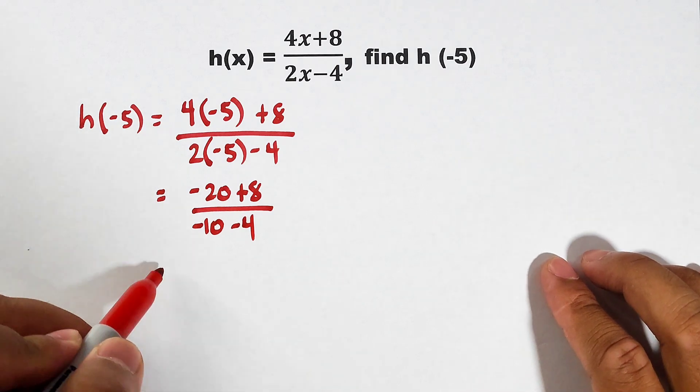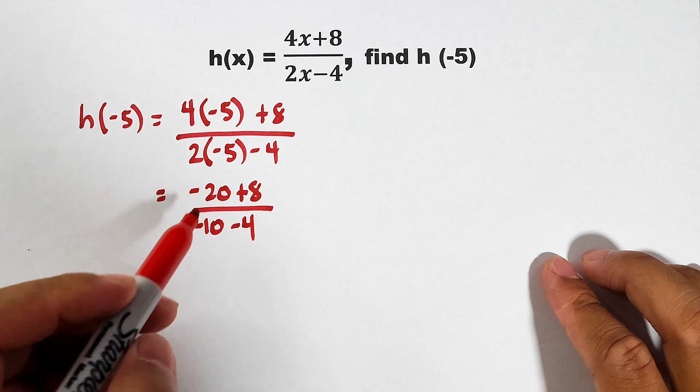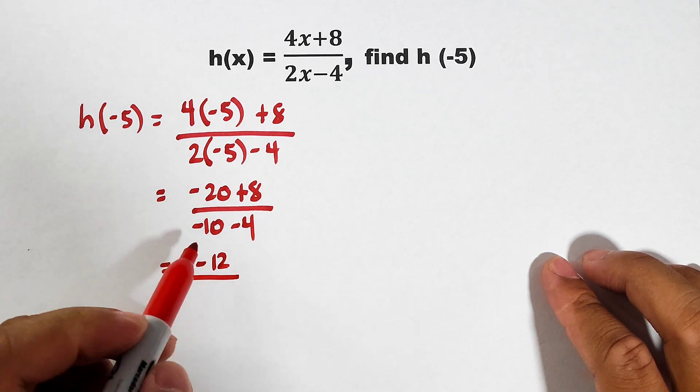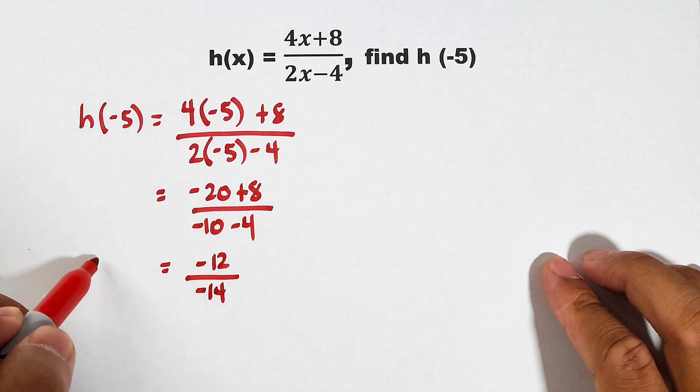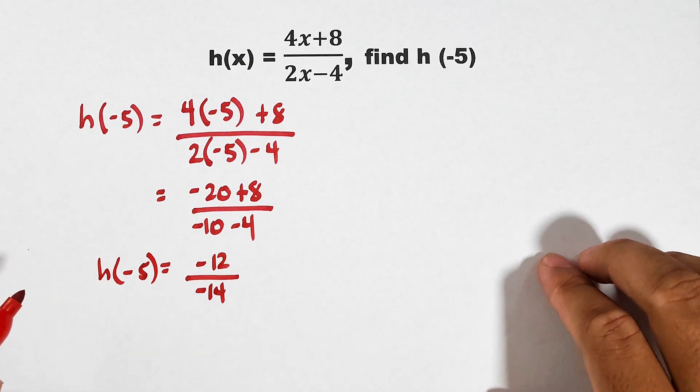Let's simplify this one. Negative 20 plus 8 is negative 12 over negative 10 minus 4 is negative 14. H of negative 5. Now let's continue.